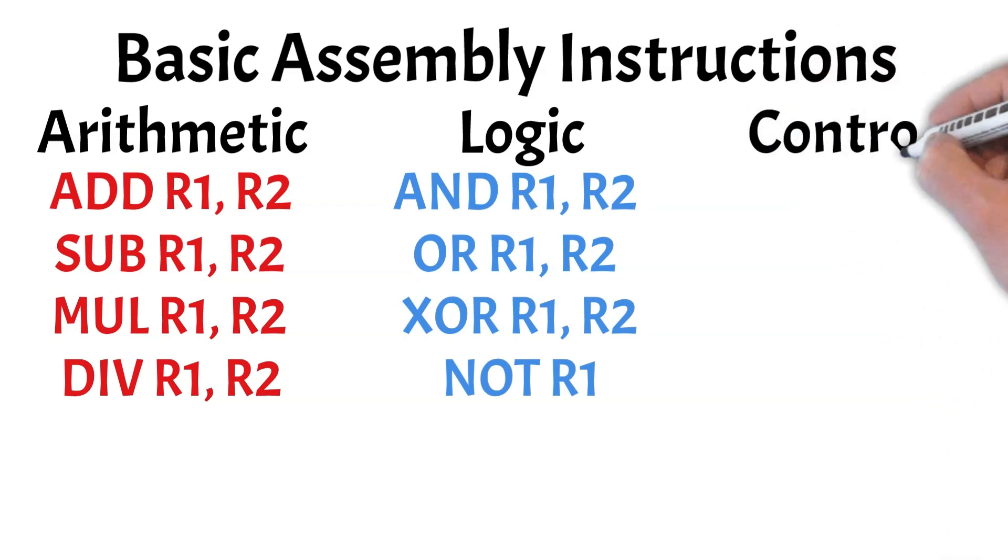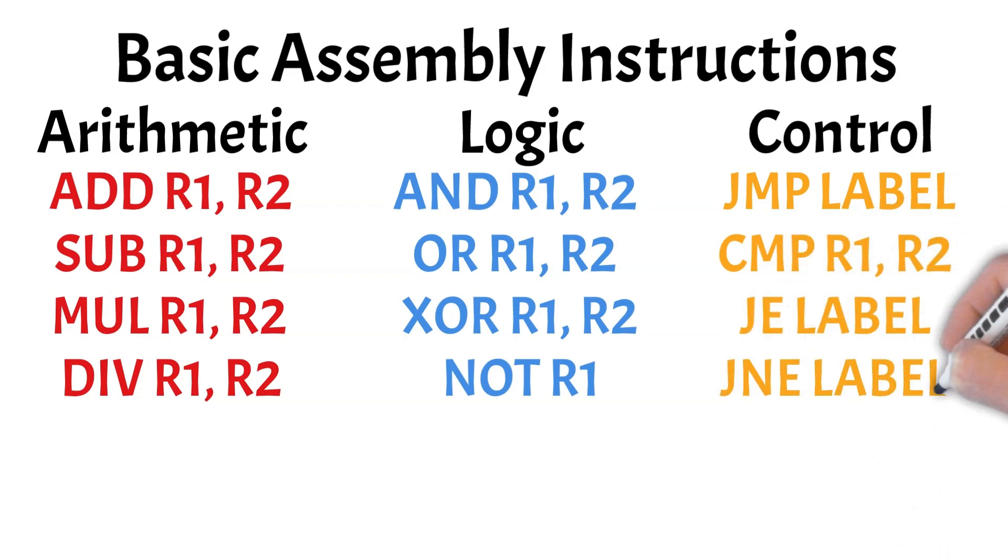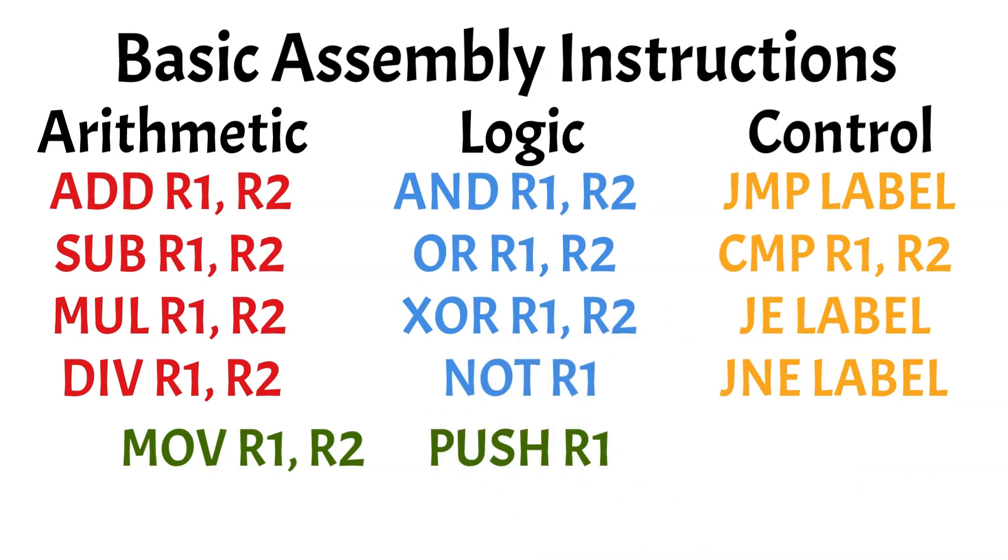Control instructions direct program flow. JUMP label causes the program to jump to a specific point labeled in the code, and COMPARE R1, R2 compares the values in R1 and R2. Based on this comparison, jump if equal jumps if the values are equal, while jump if not equal jumps if they are not. Data movement instructions transfer data. MOVE R1, R2 moves data from R2 to R1. PUSH R1 saves R1's value onto the stack, and POP R1 retrieves the last value from the stack.